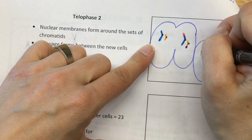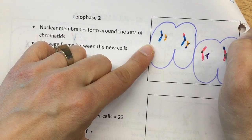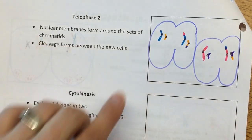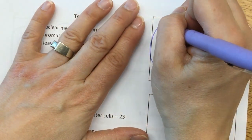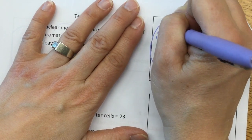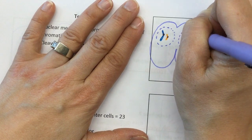And don't forget to add your central mirror, okay? And now the nuclear membrane starts to form around each of these sets, okay?